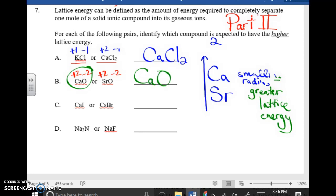Part C, CaI versus CsBr. Ca is plus 2, I is minus 1. Cs is plus 1, Br is minus 1. Greater charges, either positive charges or negative charges. So that means CaI has the greater lattice energy.